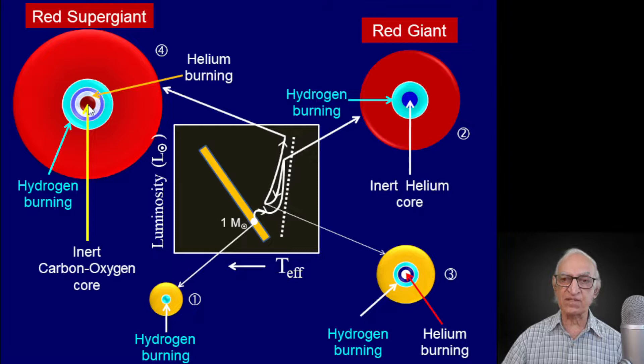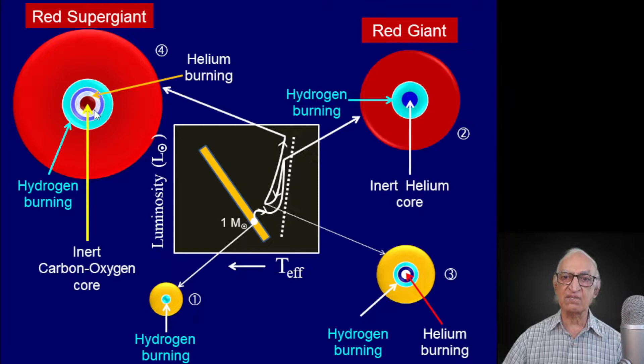Right at the center of the core, helium has converted part of it to carbon with a little admixture of oxygen. So in a red supergiant star, what you have right at the center is an inert carbon-oxygen core surrounded by helium still fusing to form carbon, which is surrounded by hydrogen still continuing to convert to helium, and so on.